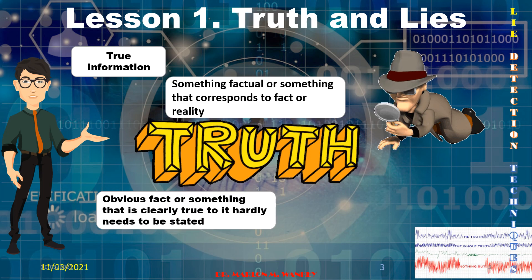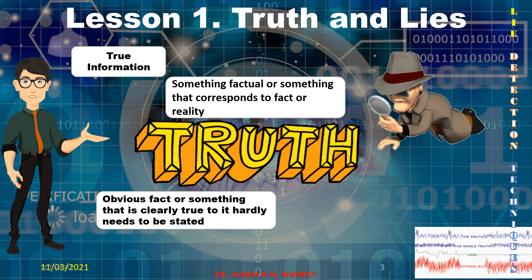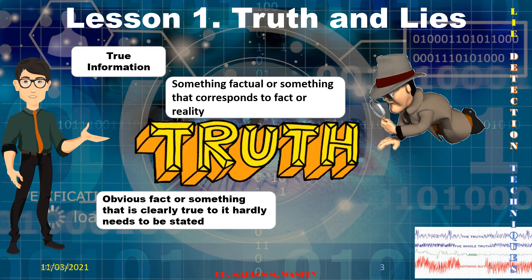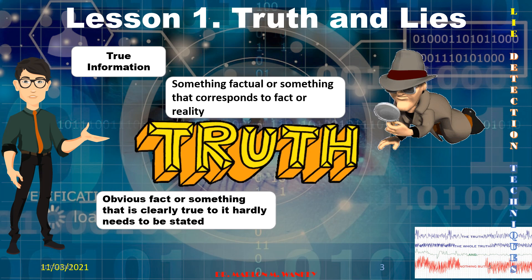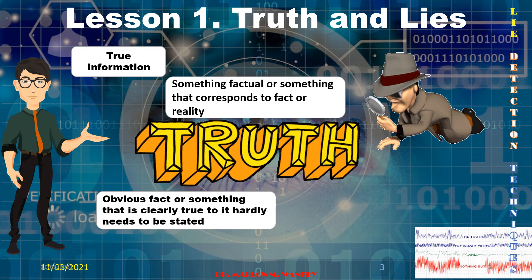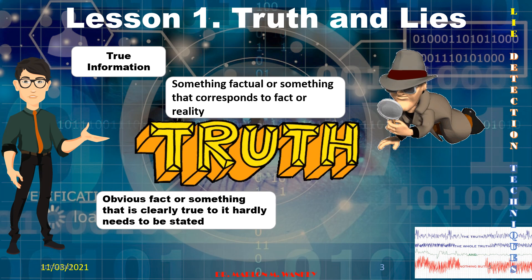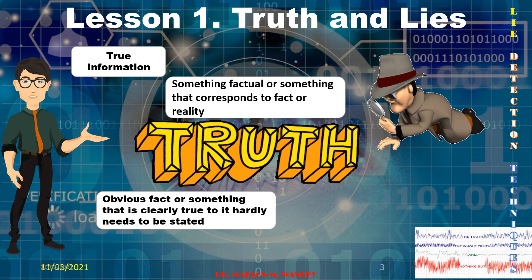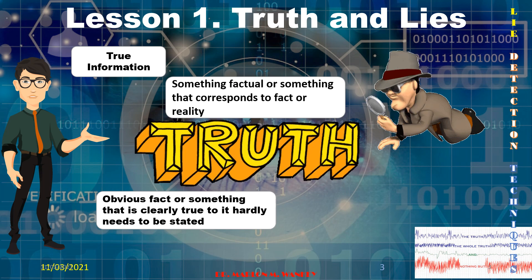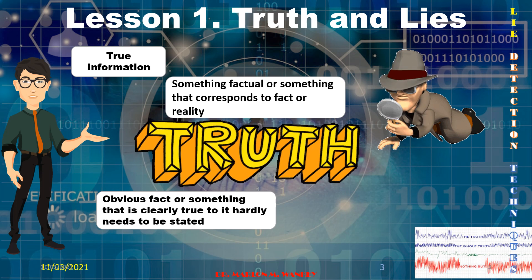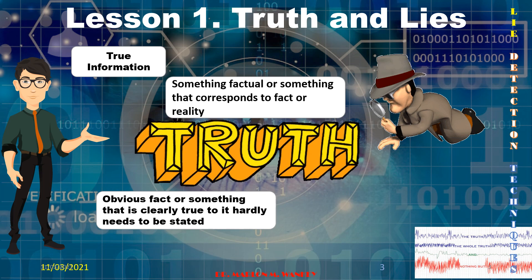Truth is also an obvious fact — something so clearly true it hardly needs to be stated. It is believable and convincing, supported by evidence. It is not a conjecture — opinions that are not supported by evidence. Truth is supported by evidence that goes beyond doubt.